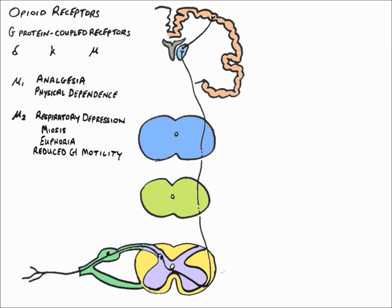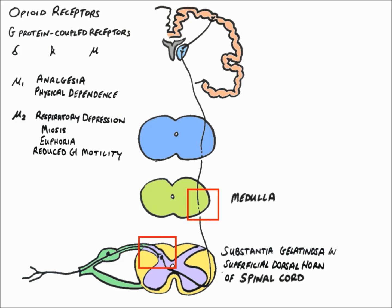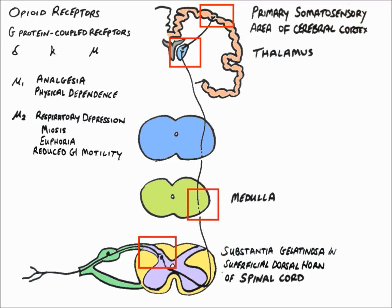Opioids act at opioid receptors to reduce pain transmission within the substantia gelatinosa of the dorsal horn of the spinal cord. They also act in the medulla, the thalamus, and at the primary somatosensory region of the cerebral cortex.